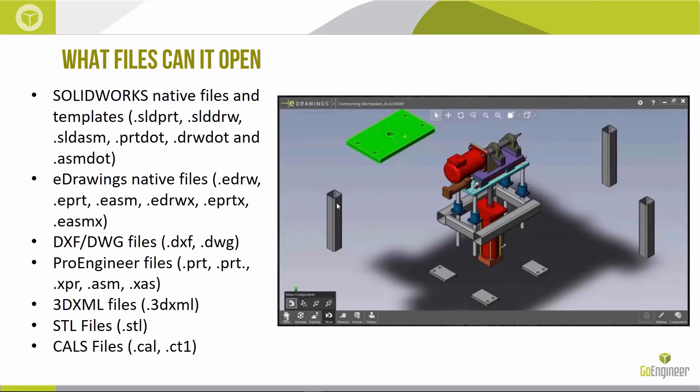Let me briefly talk over what files eDrawings can open. You can open SolidWorks native files, eDrawings files which are file formats specific to eDrawings, DXF and DWG files — meaning we can also look at 2D files — as well as Pro/Engineering files, 3D XML files, STL files, and CALS files. So you never have to worry about CAD compatibility when working in eDrawings.